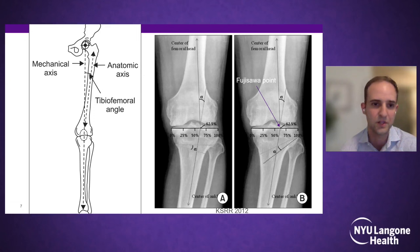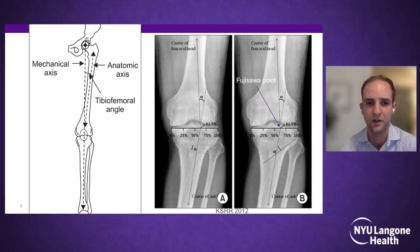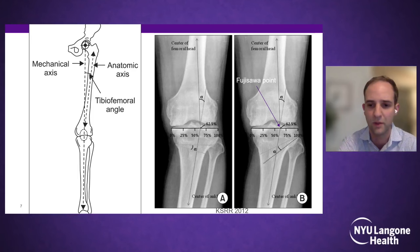To establish the mechanical axis and plan correction, we drop a plumb line through the center of the femoral head through the center of the tibial plafond. The degree of correction can then be established. The most common use for HTO is a medial offloading valgus-producing procedure. When treating focal chondral defects, I correct the midpoint of the knee between the tibial spines. For osteoarthritis, a 62.5% correction across the tibial plateau has been recommended.